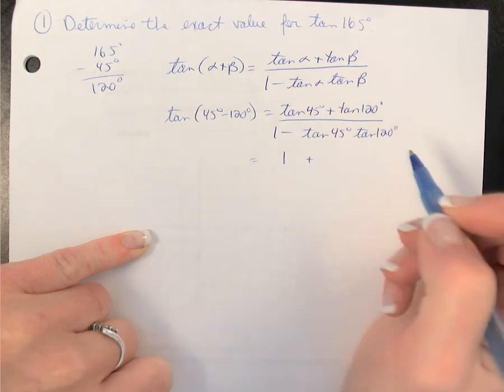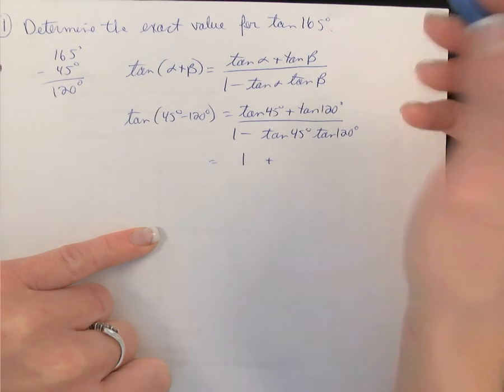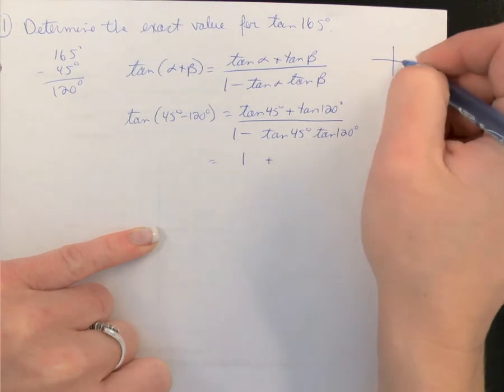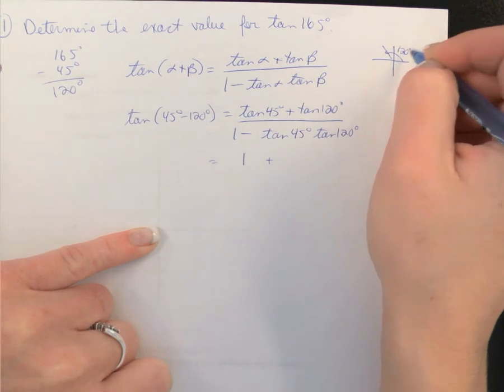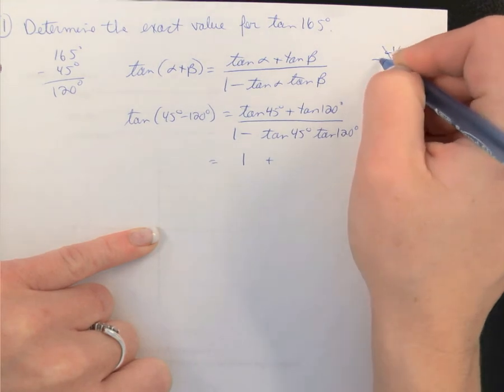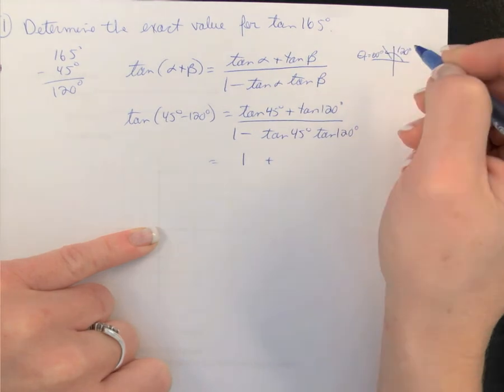tan of 120, we're going to want to consider what quadrant 120 is in. Remember, 120 is in quadrant 2. So if this is 120 degrees, if we take our 180 as our full distance, our reference angle must be 60 degrees. So we're dealing with quadrant 2.